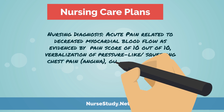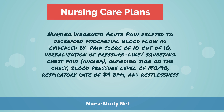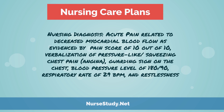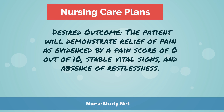Now let's go ahead and move on to a sample care plan. We have several care plans on nursestudy.net — just go to the website and type in what you want to look up, and each article usually has two to four care plans attached to it. The first nursing diagnosis for CAD would be: acute pain related to decreased myocardial blood flow as evidenced by a pain score of 10 out of 10, verbalization of pressure-like squeezing chest pain (angina), guarding sign on the chest, blood pressure of 180 over 90, a respiratory rate of 29 breaths per minute, and restlessness. The desired outcome: the patient will demonstrate relief of pain as evidenced by a pain score of 0 out of 10, stable vital signs, and absence of restlessness.